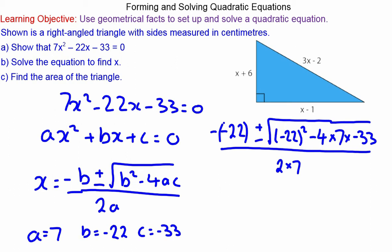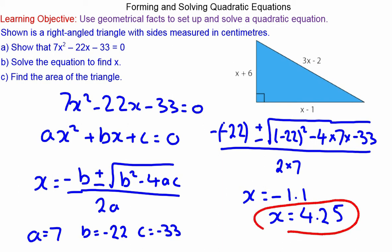Working that out on a calculator gives two values: x = -1.1 and x = 4.25. Since x = -1.1 cannot be the answer because you cannot have a negative length, x must equal 4.25.